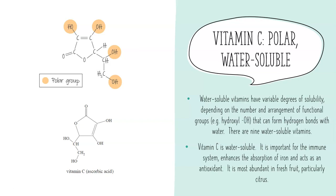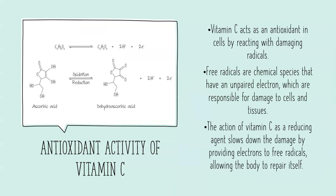The structure for vitamin C, just like vitamin D, is provided in your data booklet. Vitamin C is important for the absorption of iron in our body and is most abundant in fresh fruit. A deficiency in vitamin C can lead to scurvy. It acts as an antioxidant by reacting with damaging free radicals — species that have an unpaired electron. As a reducing agent, vitamin C provides electrons to these free radicals, usually by binding as a cofactor to an enzyme, being oxidized itself while the other substance is reduced.